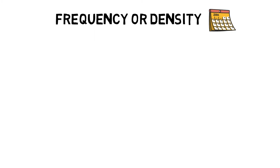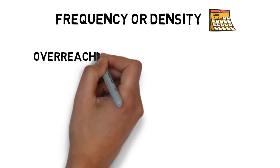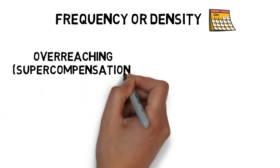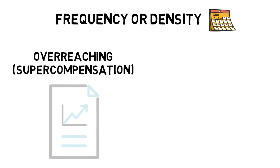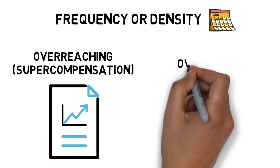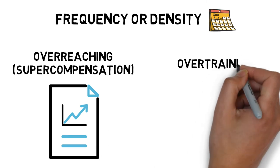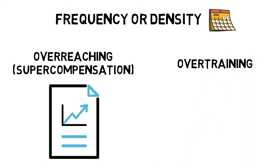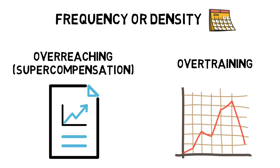Manipulation of these factors can lead to over-reaching, which is a planned period of intense training during a short-term cycle to improve performance. There is an initial decrease in performance, but with the appropriate recovery, a super-compensation effect occurs, resulting in enhanced performance compared with baseline levels. Or overtraining, which is a long-term decrease in performance as a result of prolonged exposure to high levels of training.